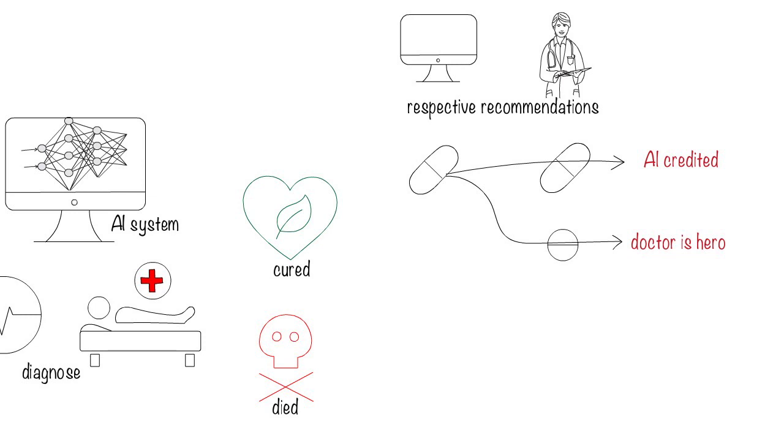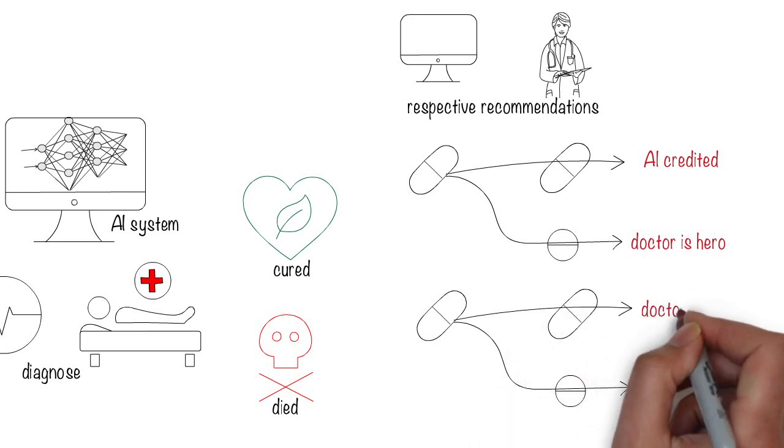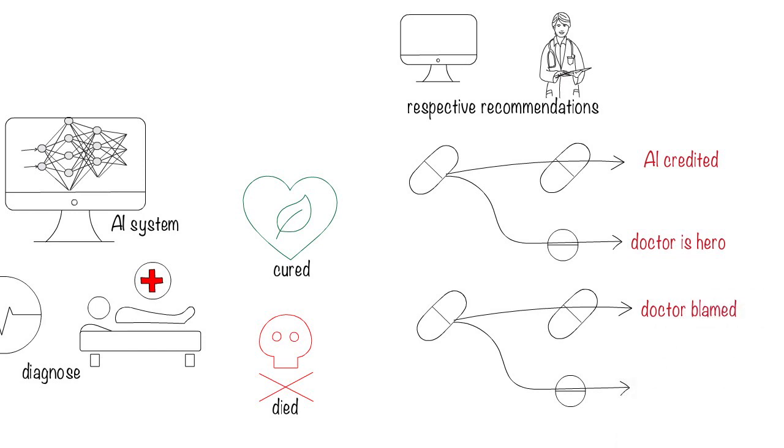Now what happens if the patient dies? We have the same possibilities of decisions by the AI system and by the doctor. In the first case, the doctor is blamed for not overriding the system and in the second case, the doctor is blamed for overriding the system.